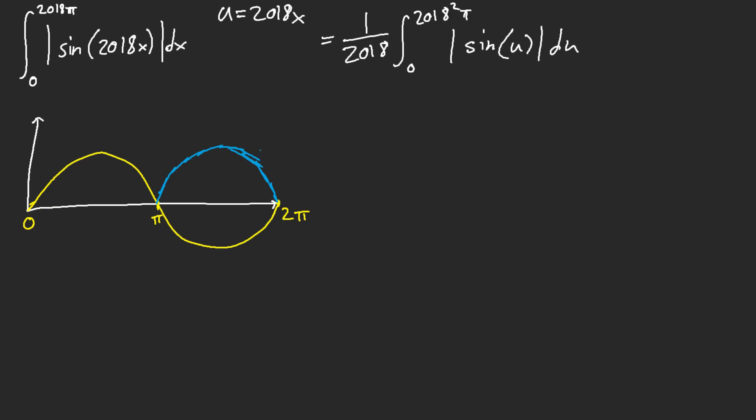It's going to get reflected. So, what that means is that the graph of the absolute value of sine of x is going to look like this.